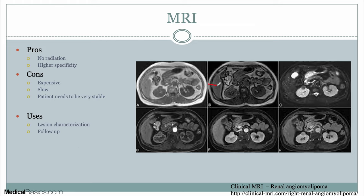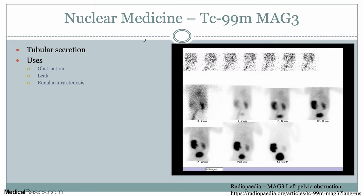In this example, we have an AML. We have the Indian ink artifact of this right upper pole lesion, showing that there's macroscopic fat that you wouldn't necessarily be able to say with as much confidence on other imaging modalities — although you would be able to at least infer it and then get an MRI to confirm.